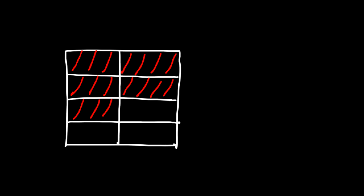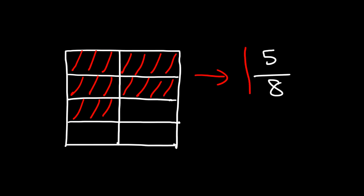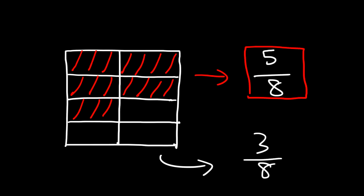What fraction of the square is not shaded and what fraction is shaded? Out of the eight parts, five of those parts are shaded, so we could say that five eighths of the square is shaded. Now what fraction is not shaded? Out of the total eight parts, three parts are not shaded.